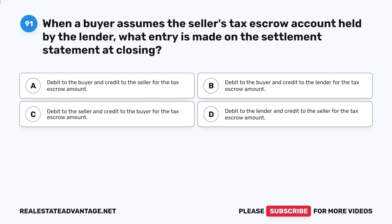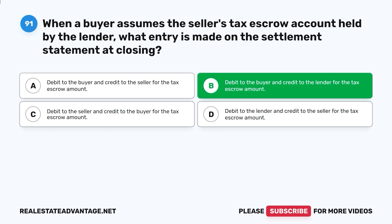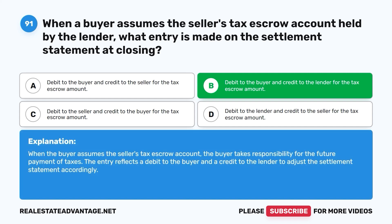Question 91: When a buyer assumes the seller's tax escrow account held by the lender, what entry is made on the settlement statement at closing? A. Debit to the buyer and credit to the seller for the tax escrow amount. B. Debit to the buyer and credit to the lender for the tax escrow amount. C. Debit to the seller and credit to the buyer for the tax escrow amount. D. Debit to the lender and credit to the seller for the tax escrow amount. The correct answer is B. When the buyer assumes the seller's tax escrow account, the buyer takes responsibility for future tax payments; the entry reflects a debit to the buyer and a credit to the lender to adjust the settlement statement accordingly.